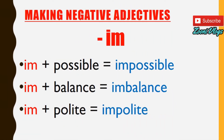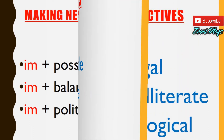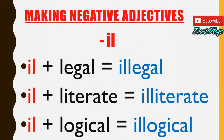The prefix 'im-' gives us 'impossible,' 'imbalanced,' and 'impolite.' The prefix 'ill-' gives us 'illegal,' 'illiterate,' and 'illogical.'